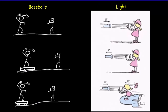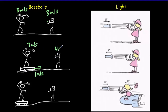It doesn't always sink in how bizarre it is that all observers measure the same speed for light regardless of their motion. Let's do an analogy with baseballs. A baseball pitcher always throws at 3 m/s. The stationary catcher measures 3 m/s. If the pitcher is on a skateboard moving at 1 m/s, the catcher measures 4 m/s. If the skateboard moves backwards at 1 m/s, the catcher measures 2 m/s. All well and good with baseballs.